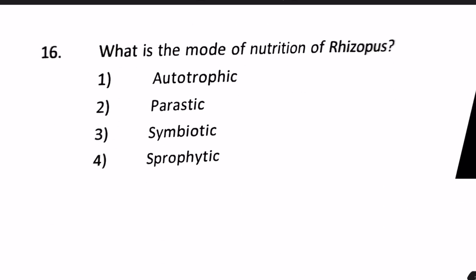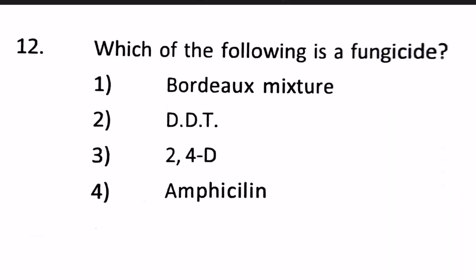Next question: What is the mode of nutrition of Rhizopus? Options are autotrophic, parasitic, symbiotic, or saprophytic. No fungus can be autotrophic. Rhizopus does not have any symbiotic or parasitic relationship with a host — the answer is saprophytic.